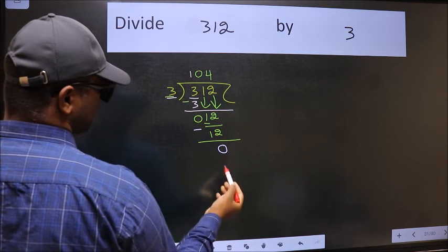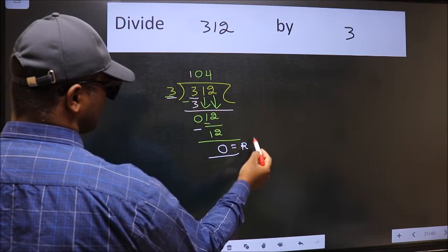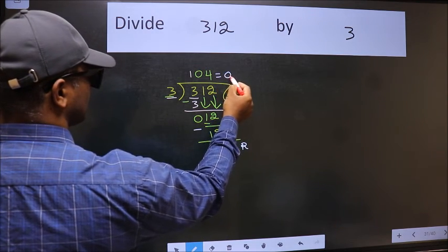No more numbers to bring it down. So this is where we stop. So this is our remainder and this is our quotient.